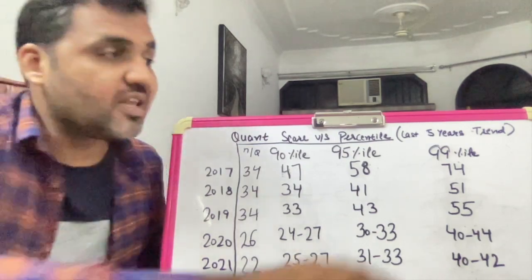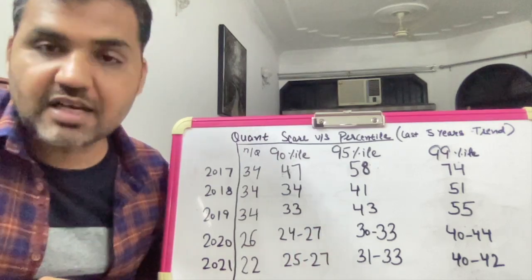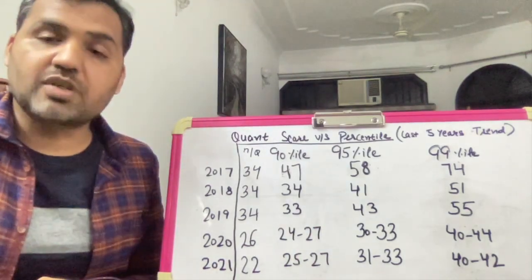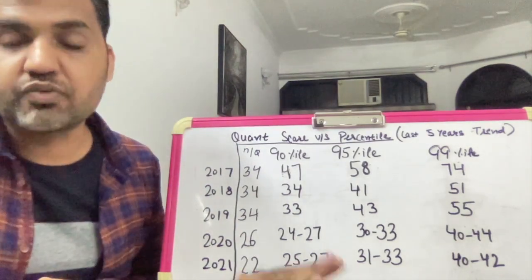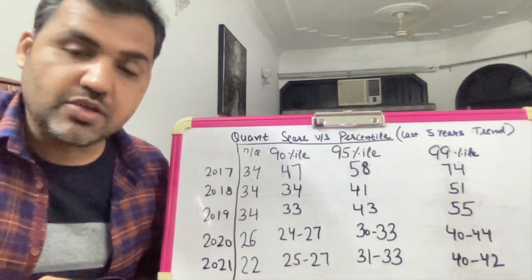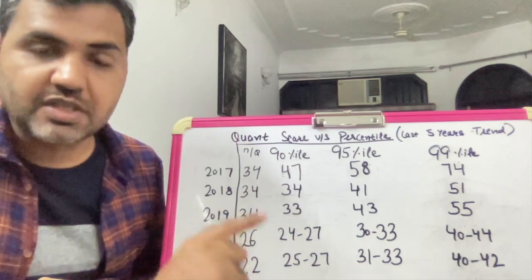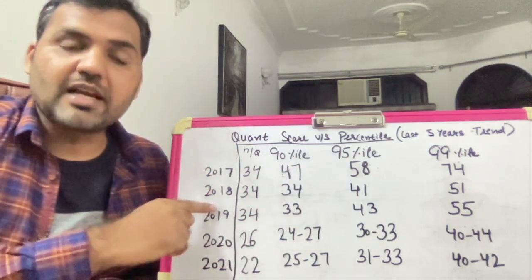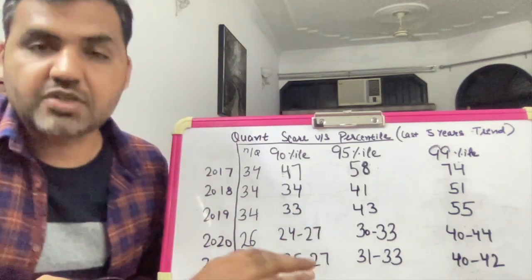Why did 2017 require 75% correct? The reason is that 2017's quant section was very, very easy. Compared to 2018, 2019, 2020, and 2021, in 2017 the arithmetic questions were very straightforward — time and work, percentage, profit and loss — basic topics that almost anybody with fundamentals could solve. That is the main reason why in 2017 you needed 75% of the quant section correct.